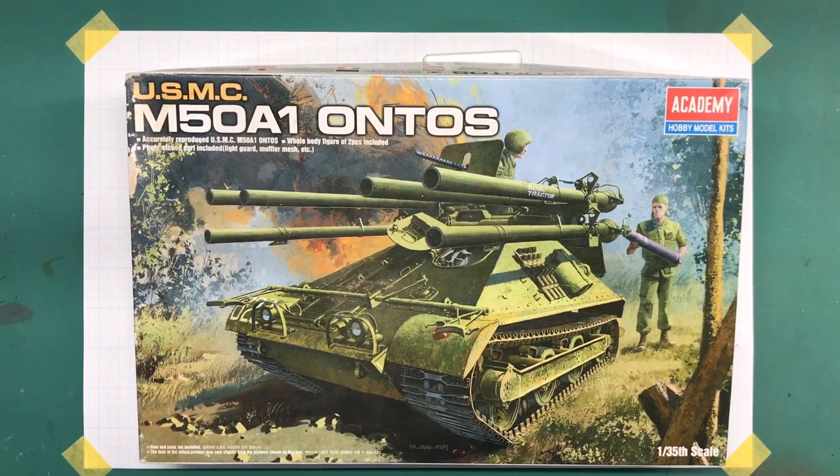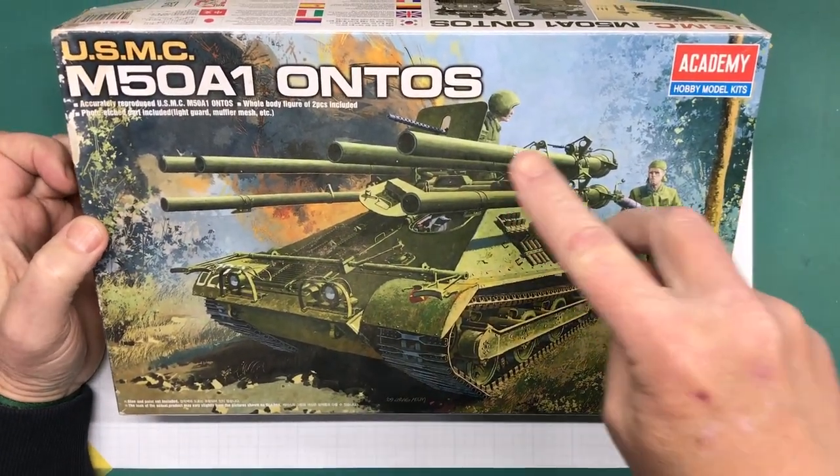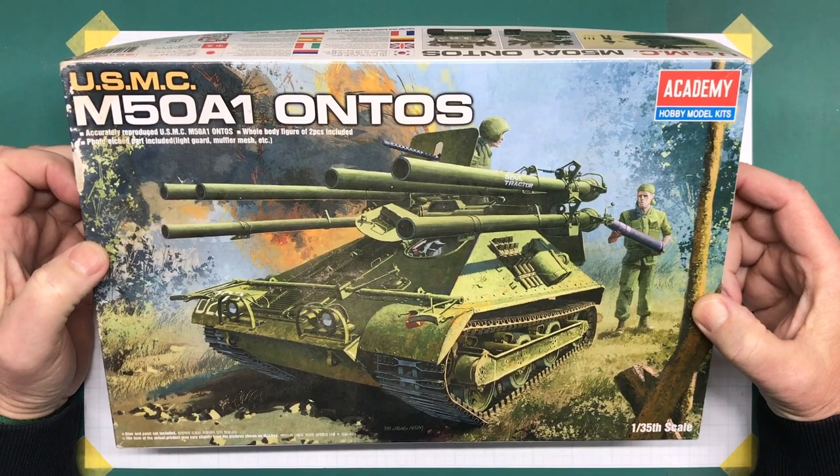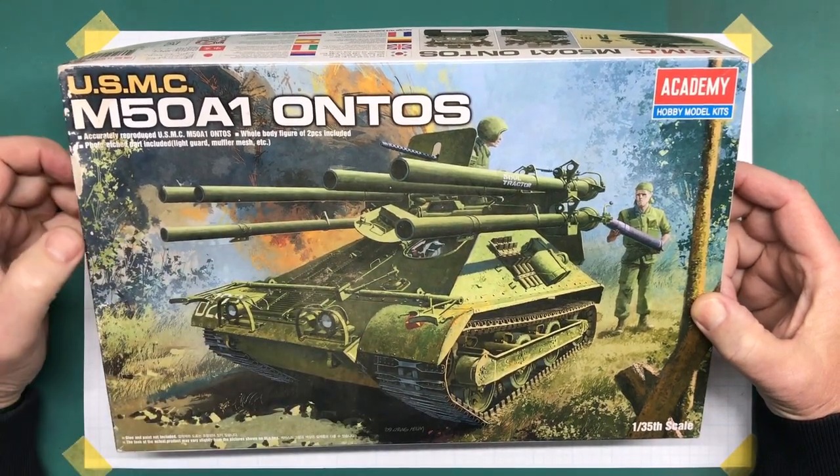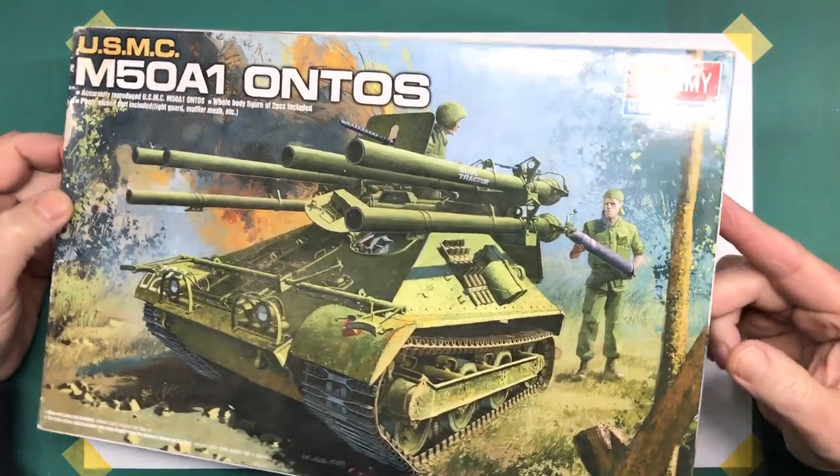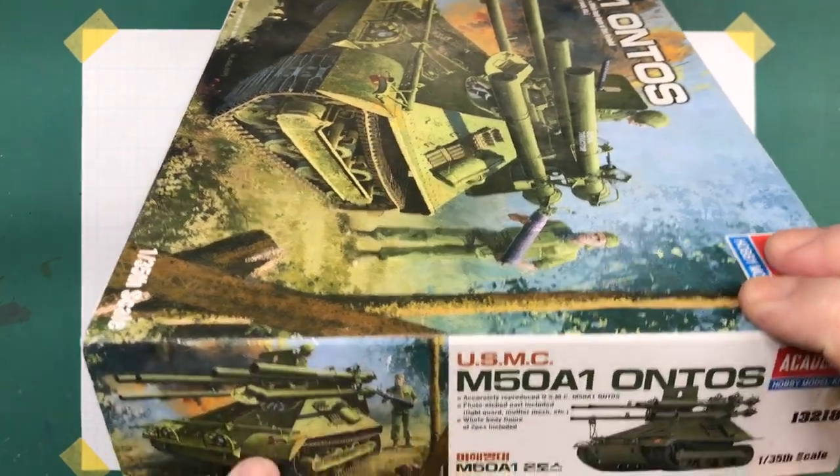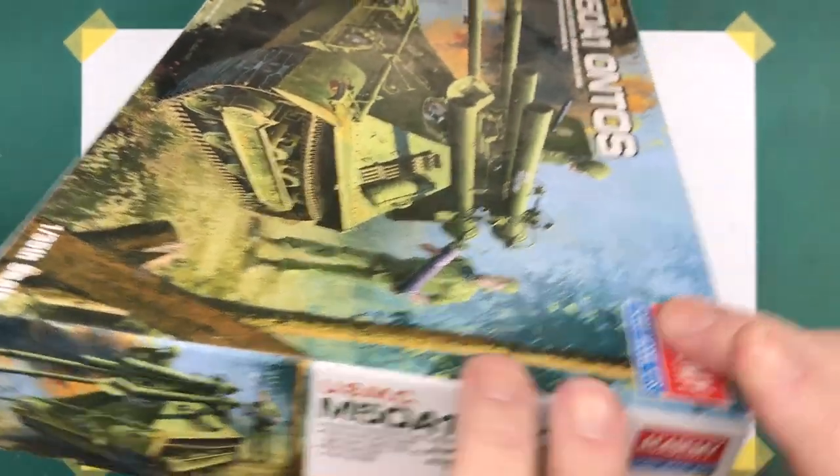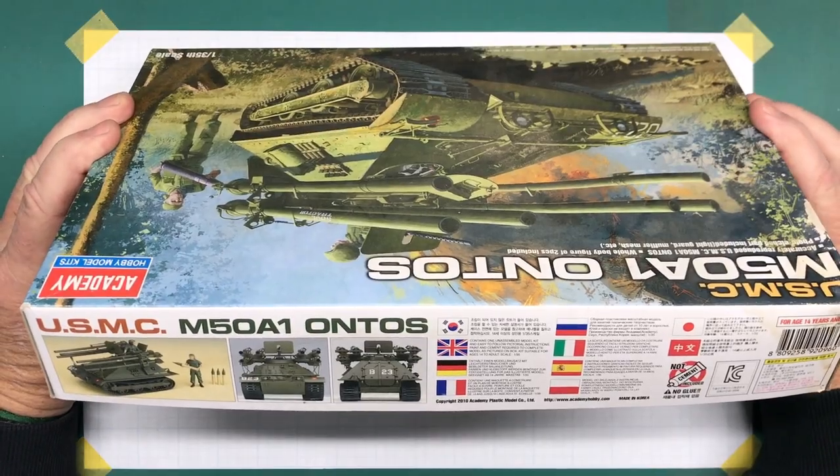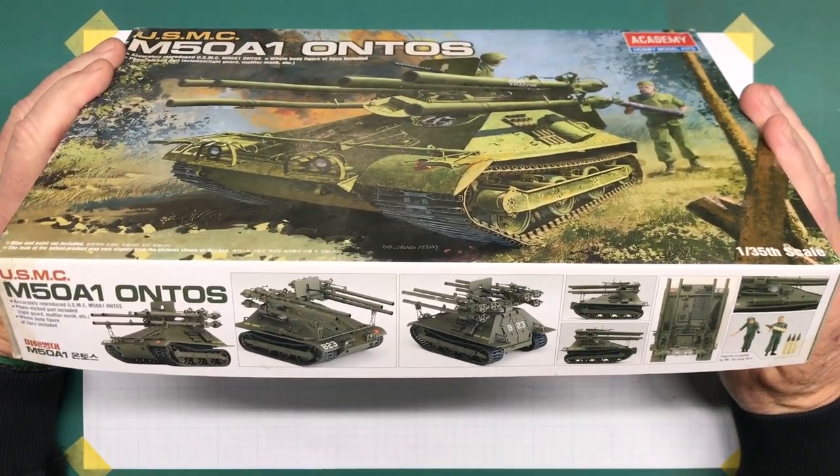So this is the original boxing of it. Let's take a look at the outside of the box. You have this nice cover art here, painting, two figures. US Marine Corps M50A1 Ontos. Accurately reproduced, whole body figures of two pieces included, photo-etched parts included, light guard, muffler mesh, etc. The ends of the box are basically the same thing. Another illustration of the painting and then the actual model kit itself.